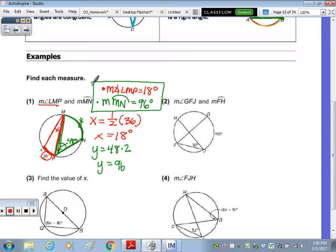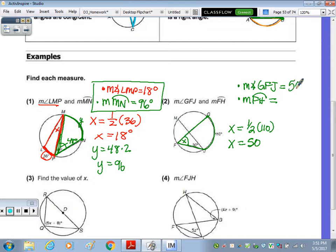Number 2, so let me set up my answers. We need to find the measure of angle GFJ and the measure of arc FH. So let's start with angle GFJ. So in tracing along, it's this angle here, which I'll call X. Tracing the arc that goes from one endpoint of the ray to the other is 110. So X is going to be, since it's the angle, half of 110. So X equals 50, and that was the angle GFJ, 50 degrees.